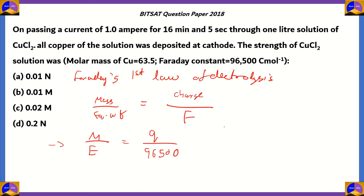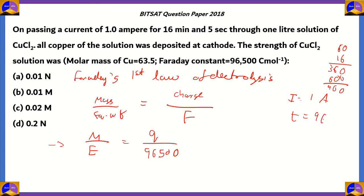Here, I equals 1 ampere, and the time period equals 16 minutes and 5 seconds. That is 60 times 16 equals 960, plus 5, so that is 965 seconds.